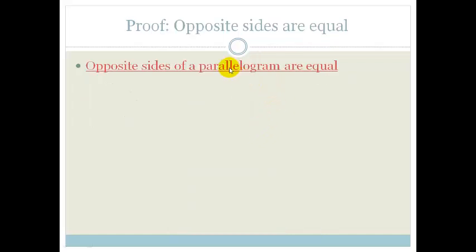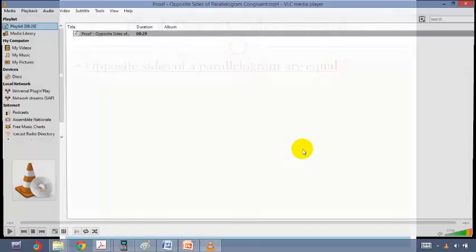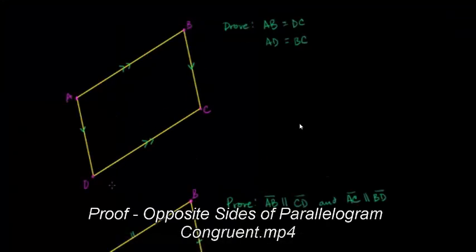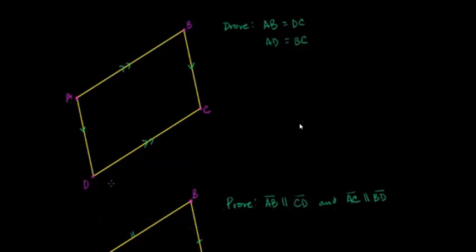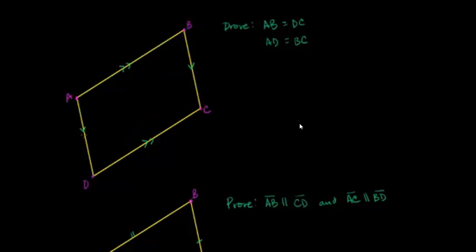The first thing we're going to look at is that opposite sides of a parallelogram are equal. If we have parallelogram ABCD, let's prove that AB equals DC and AD equals BC. I'm going to draw a diagonal here. This diagonal, depending on how you view it, is intersecting two sets of parallel lines, so you could also consider it to be a transversal. If we view DB, this diagonal DB, we can view it as a transversal for the parallel lines AB and DC.